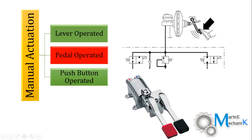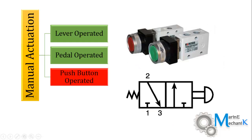Next is push button operated. Here is a real-time picture of a push button — we just have to manually push it. Upon pushing, the valve shifts its position and changes the direction of fluid flow. Push buttons are usually incorporated with a spring at the end so that they return back after the push has been released. Symbolically, it is represented so that a human finger can depress the valve to change the valve position.